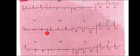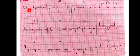Both lead 1 and aVF are upward, so the axis is normal. We then start looking at the P wave morphology, PR interval, QRS complexes, and the ST segment and T waves.